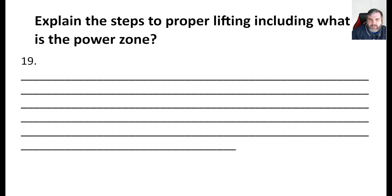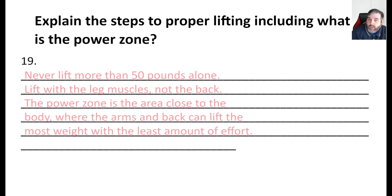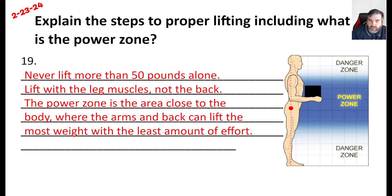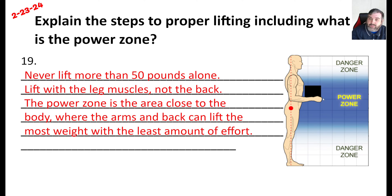Explain the steps to proper lifting, including what is the power zone. Never lift more than 50 pounds alone — 50 is typically believed to be okay for one person. Lift with the leg muscles, not the back. The power zone is the area closest to the body where the arms and back can lift the most weight with the least effort. If you're going to store items that will need to be picked up later, try to store them at the power zone so you have the least effort and least chance for personal injury.